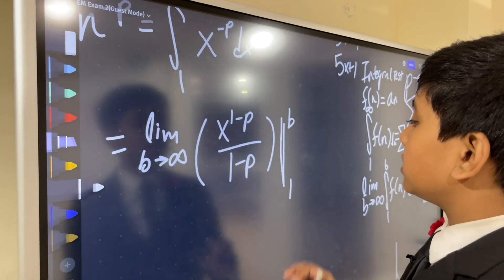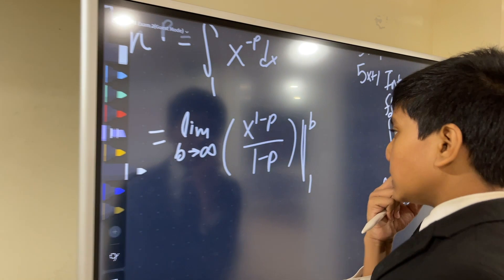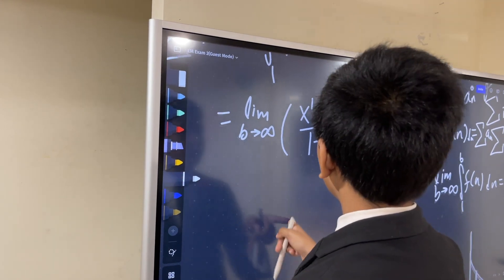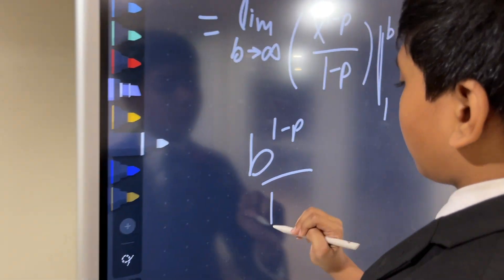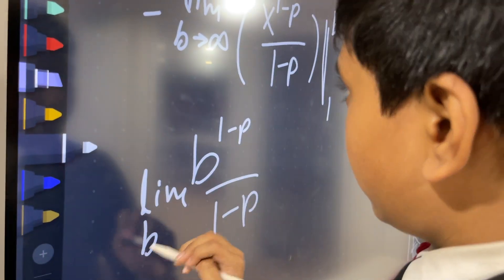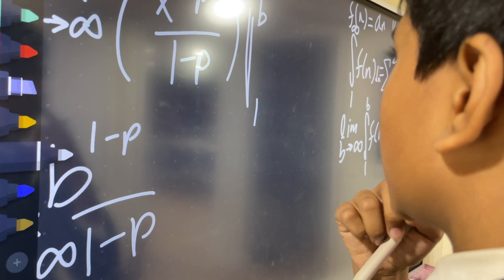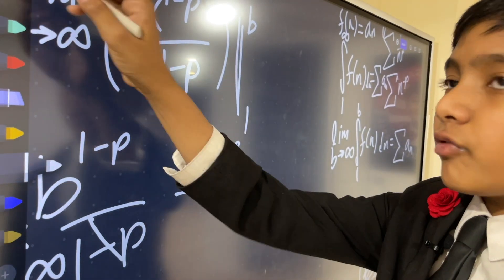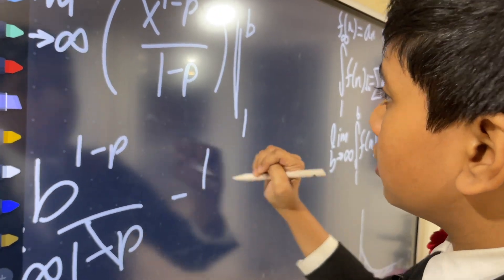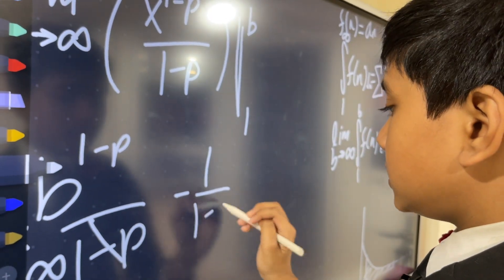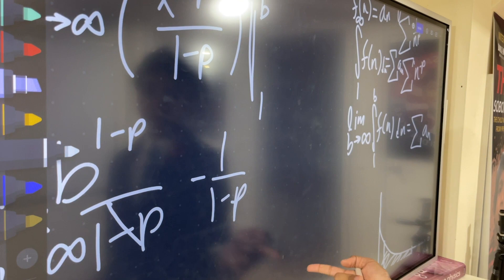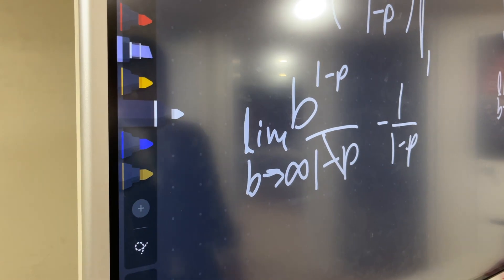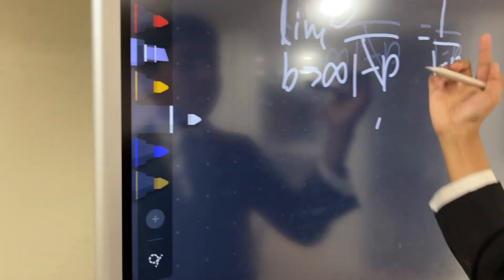Evaluating, we get the limit as b approaches infinity of b^(1−p) over (1−p) minus 1^(1−p) over (1−p). Since 1 to any power is 1, the second term is just 1 over (1−p), which is a constant we don't need to worry about. The term we need to focus on is b^(1−p) over (1−p).